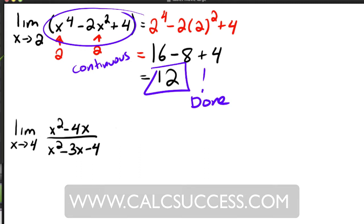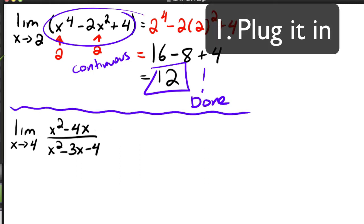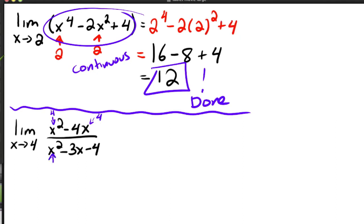Okay, so then we've got this next one. And in this one, so we plug in four into the top and the bottom. And notice this time, you get zero over zero.